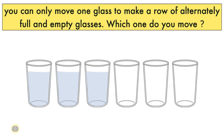In this visual brain teaser, you can see three glasses on the left that are full and three on the right that are empty. You can only move one glass to make a row of alternately full and empty glasses. Which one do you move? This is an interesting brain teaser that requires out-of-the-box thinking.